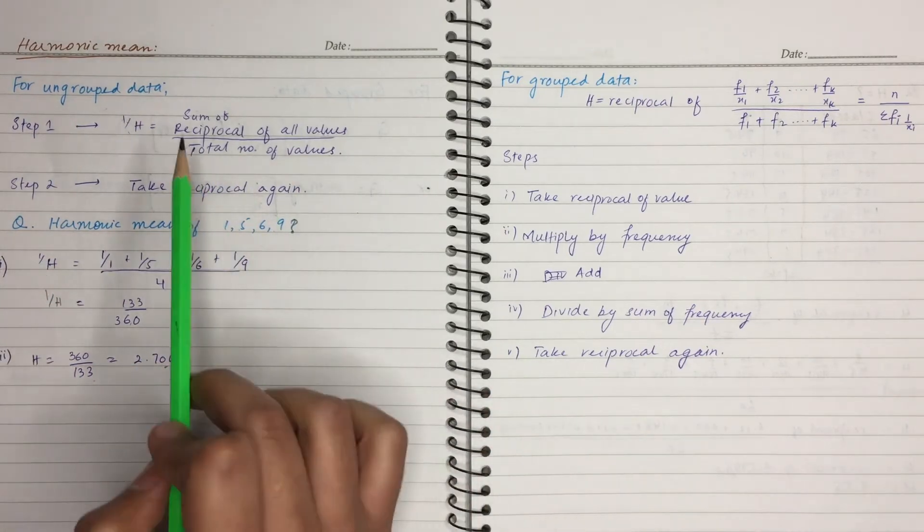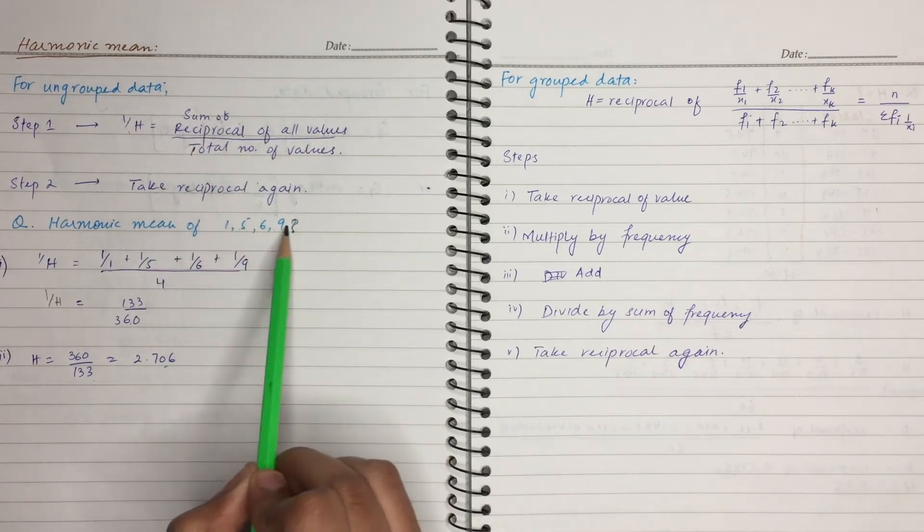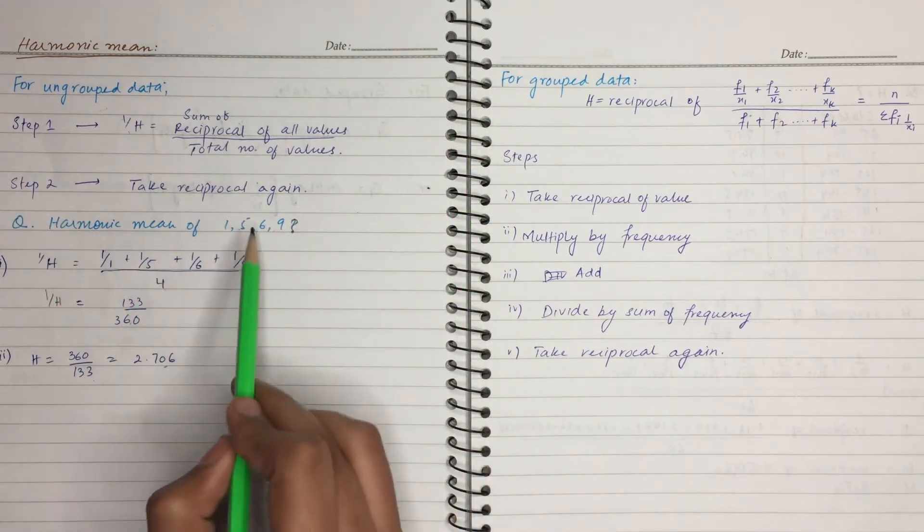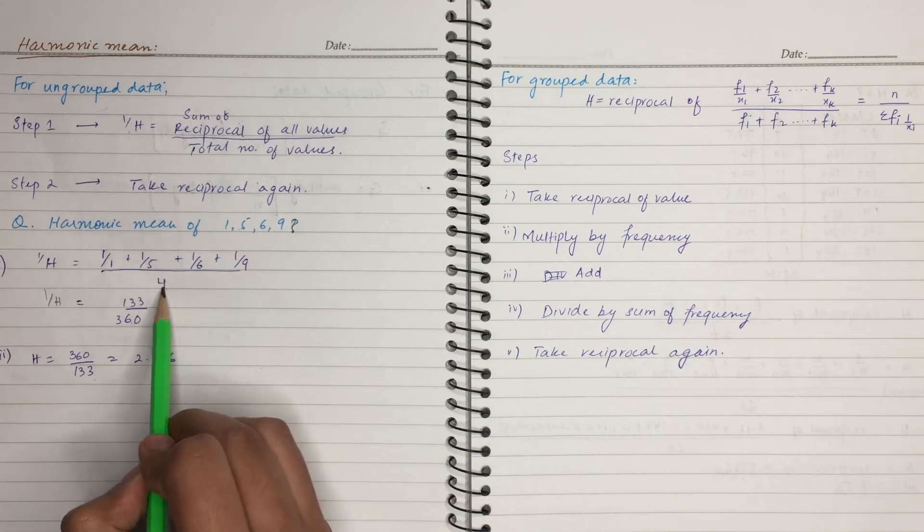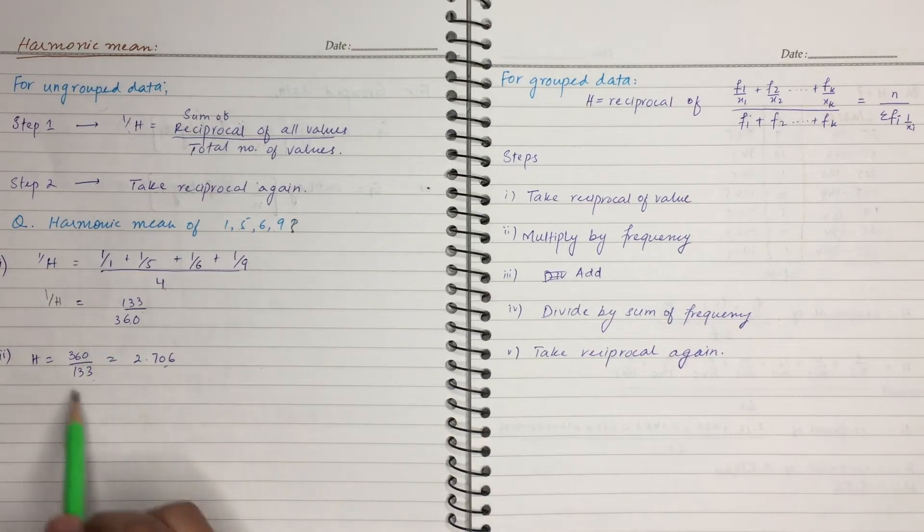I repeat that, first of all, we have sum of reciprocal of all values. These values have taken the reciprocal and taken the sum. Then we have sum divided by total number of values. When the answer comes to us, we have to take the reciprocal. Then we have harmonic mean.